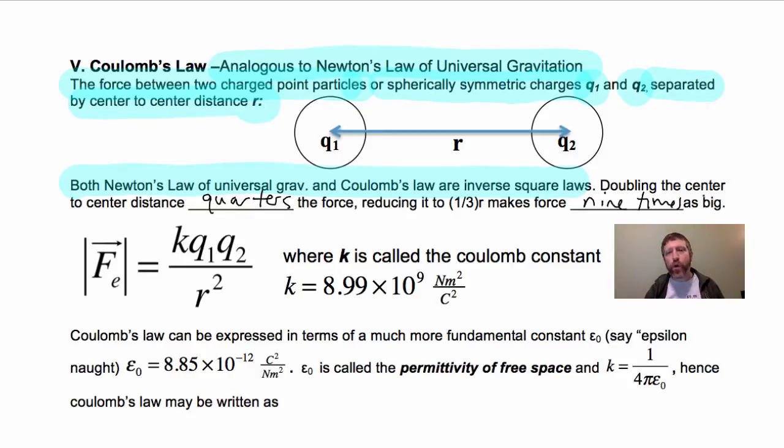Because it's an inverse, means one over R squared. So if you third the center-to-center distance, square that and one over it, you get nine times as much force. So this is Coulomb's Law right here.